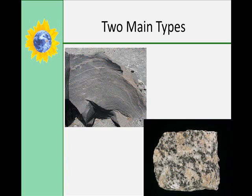Primarily, there are two main types of igneous rocks: volcanic or extrusive rocks, and plutonic or intrusive rocks. Extrusive rocks form at the Earth's surface as lava cools. Plutonic rocks form deep underground where the magma cools very slowly. That phaneritic texture you're only going to see in a plutonic or intrusive rock.